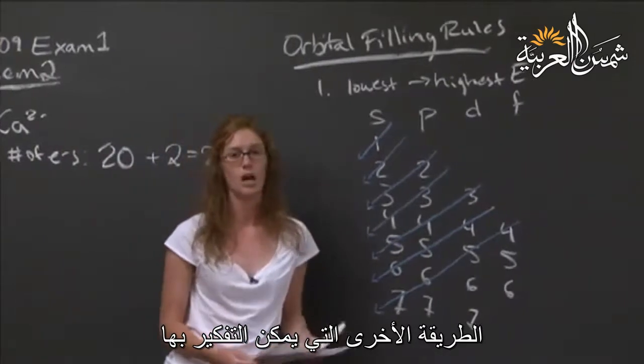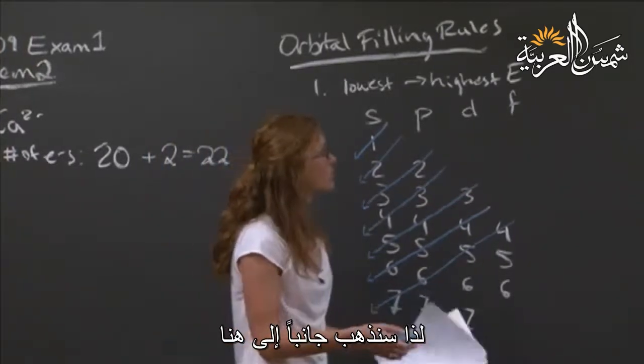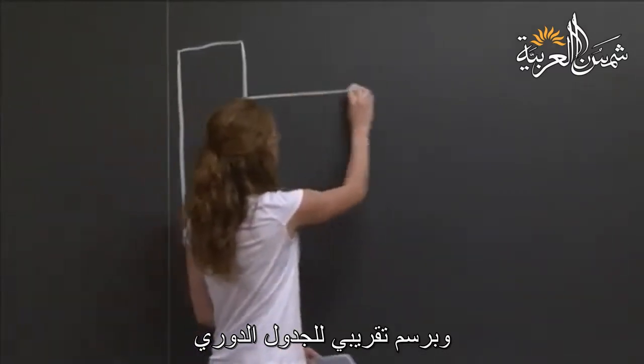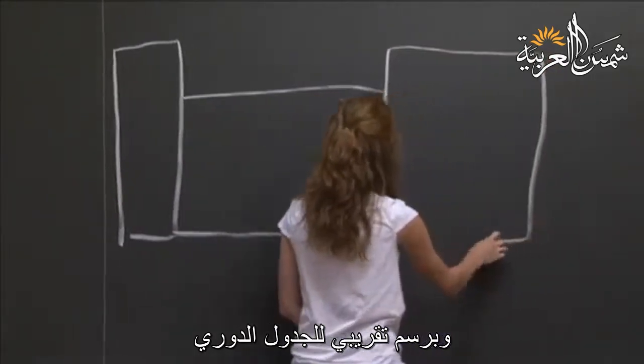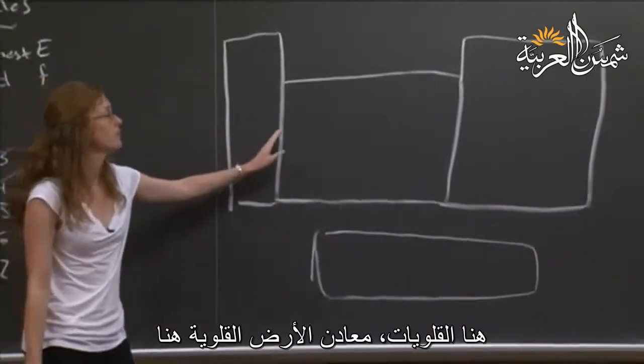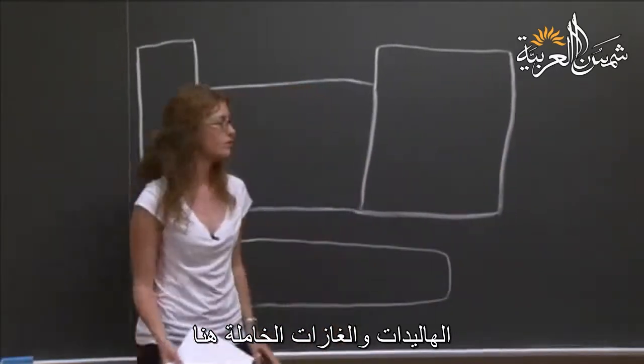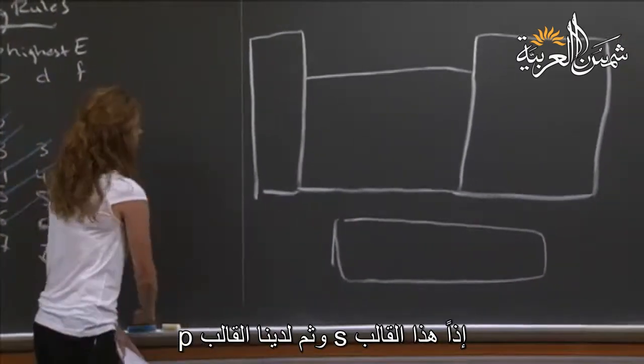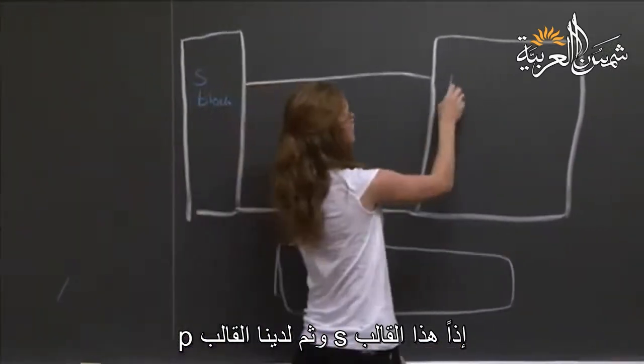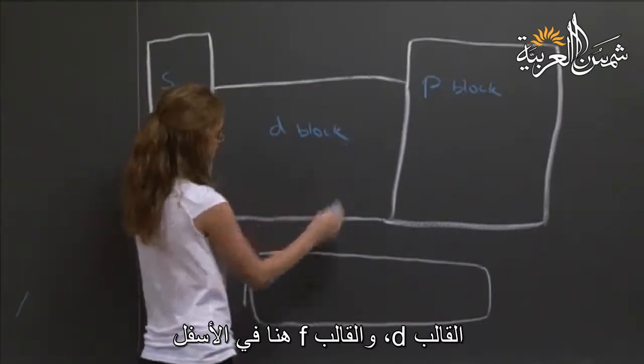The other way you can think about the ordering of the energy of the orbitals is to be familiar with the periodic table. In a general, very rough sketch of the periodic table, you have your alkali, alkali earth metals over here, aluminum, oxygen, your halides, your noble gases over there. But the way I drew it here is in what we call blocks. So this is your s block, and then we have our p block over here, d block, and the f block is down here.